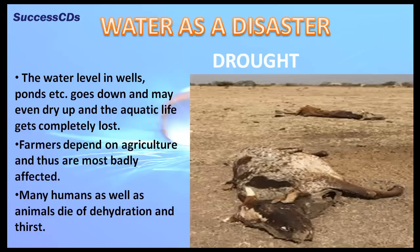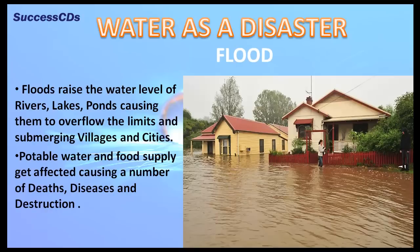Many humans as well as animals die of dehydration and thirst. Unusually heavy rainfall in an area causes a natural disaster called flood.